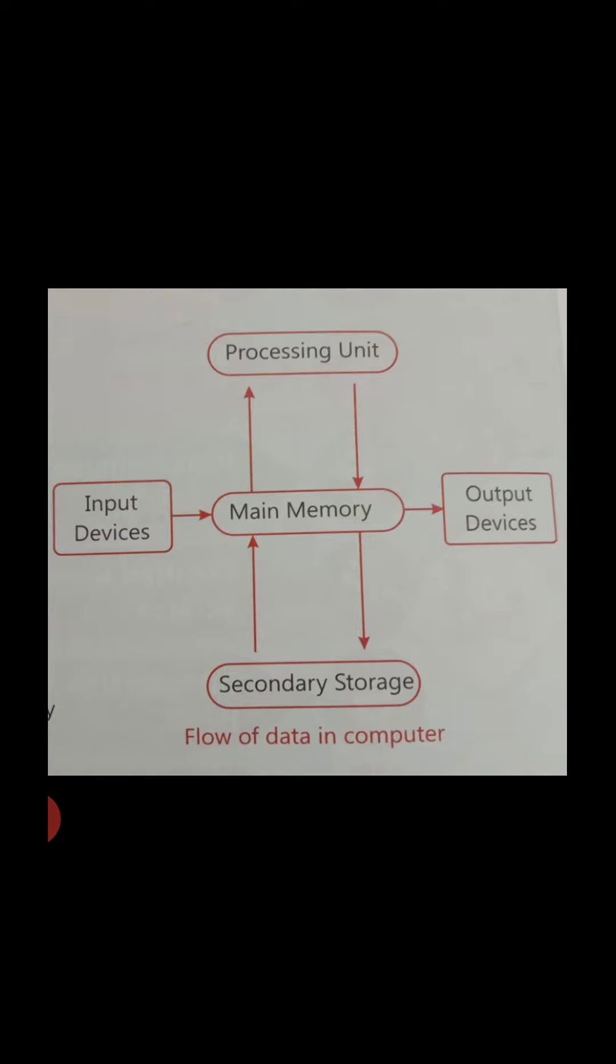Now we are going to discuss different types of computer memory. There are two types of computer memory: the first memory is primary memory, and the second memory is secondary memory.